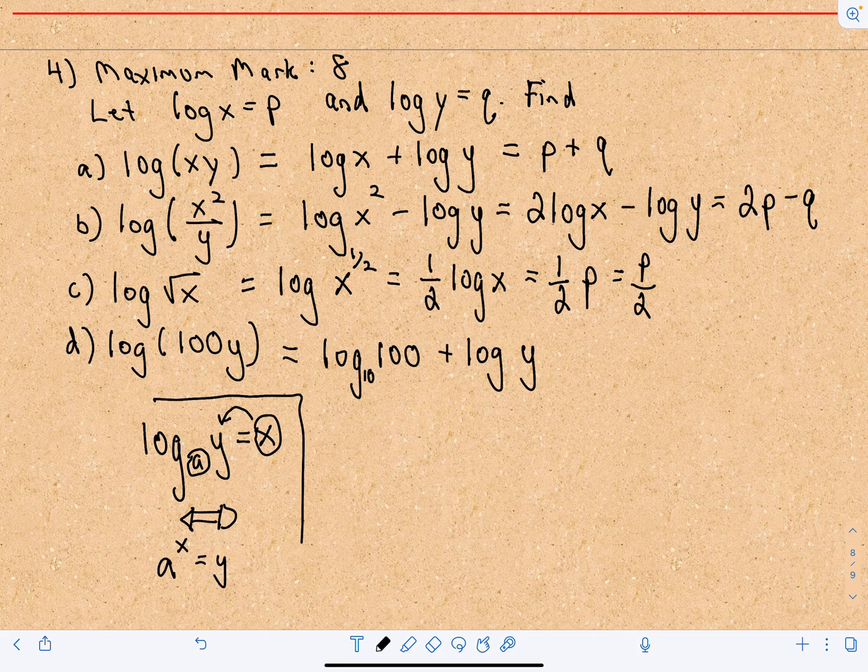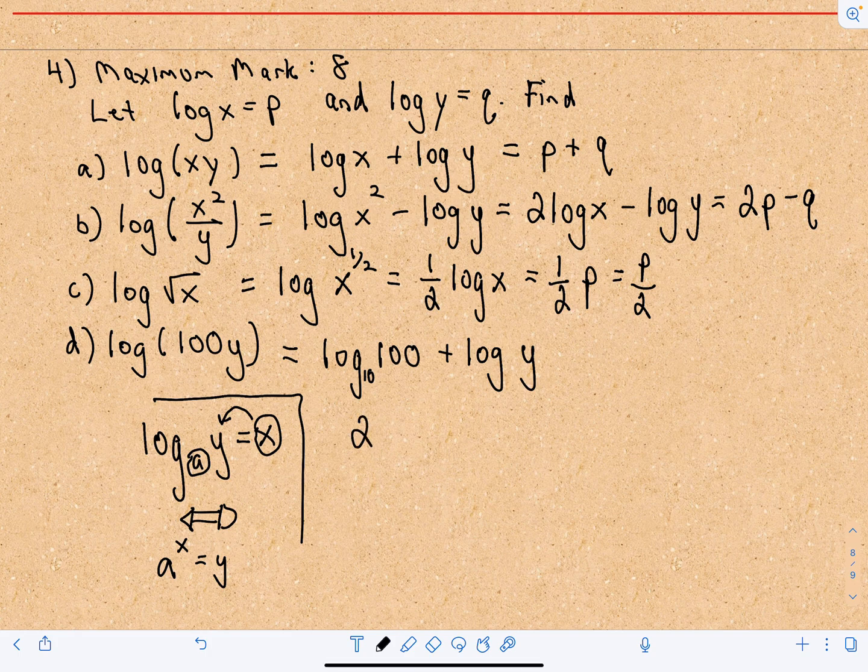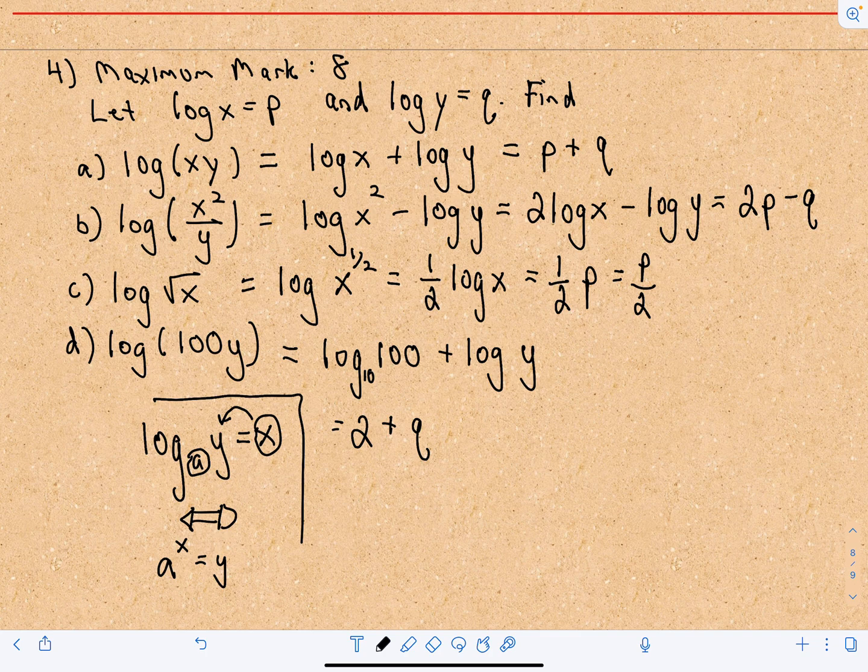Well 10 squared is 100. So this is simply going to turn into the value of 2. And then we've got log of Y, which is equal to Q. So the last expression will simply turn into 2 plus Q. And that'll be your solution for all these.